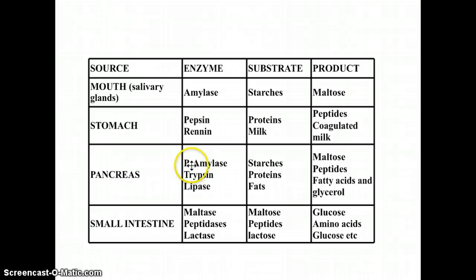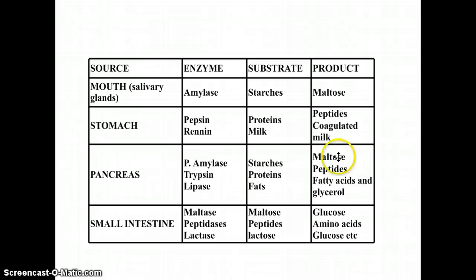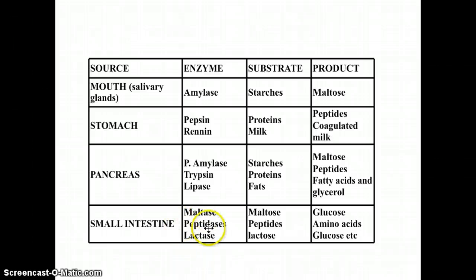The pancreas makes pancreatic amylase, trypsin, and lipase. These enzymes get secreted into the small intestine through a duct — so even though they're created by the pancreas, they're released into the small intestine, not the pancreas itself. Pancreatic amylase turns starch into maltose, trypsin turns proteins into peptides, and lipase breaks fats into fatty acids and glycerols. Also in the small intestine, you have maltase, peptidase, and lactase — these three enzymes are made by the small intestine and delivered there, whereas the pancreatic enzymes are made in the pancreas but delivered to the small intestine.